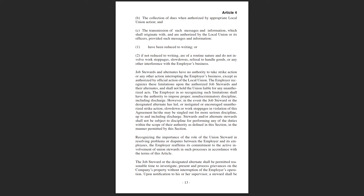And Subsection C: the transmission of such messages and information which shall originate with and are authorized by the local union or its officers, provided such messages and information — Subsection C, Subsection 2 — if not reduced to writing, are of a routine nature and do not involve work stoppages, slowdowns, refusal to handle goods, or any other interference with the employer's business. Job stewards and alternates have no authority to take strike action or any other action interrupting the employer's business except as authorized by official action of the local union.